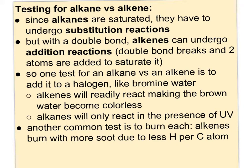To sum up: initiation creates the free radical and requires UV light. Propagation is when one free radical produces another free radical and keeps this chain reaction going. Termination is when two free radicals get together and are taken out of the propagation step — that's the big picture.